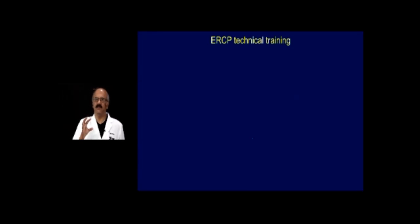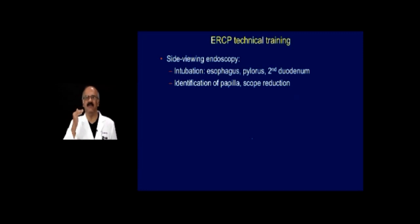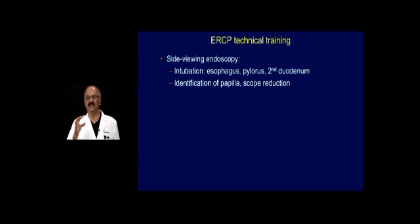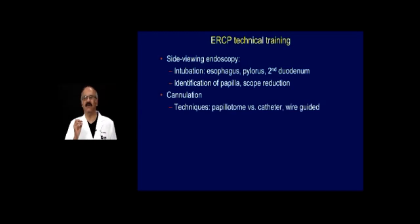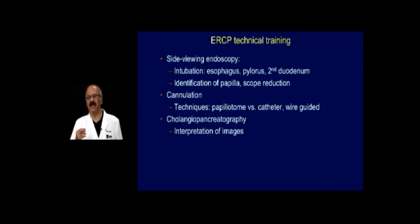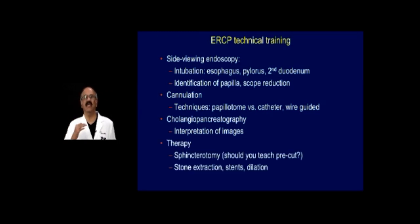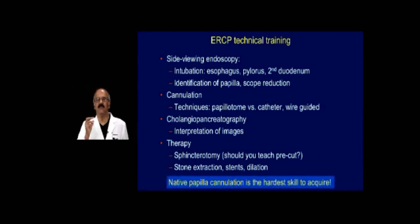Even technically difficult techniques can be learned easily if you subdivide them. For ERCP, first learn how to pass a side-wing scope, intubate the esophagus, go from the duodenal papilla into the second part of the duodenum, identify the papilla and reduce the scope. Spend the first 10 cases on this. Then try cannulation — your trainer will tell you how to use the papillotome or guide wire. Then start interpreting images. Unless you are good at interpreting images, being half technically good but not good cognitively is not acceptable. After 2-3 months of mastering technique, then go into sphincterotomy and stone extraction. The most difficult part of ERCP is native papilla cannulation — once you achieve this consistently, you are well trained.